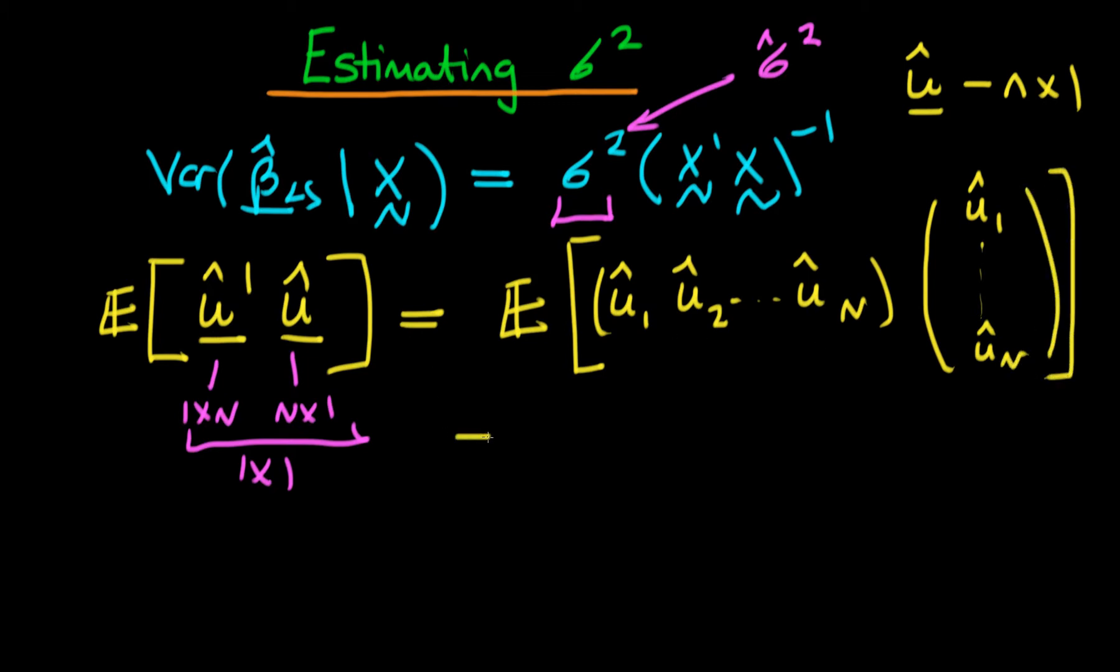We're taking the expectation of that whole thing, but essentially what we're going to get here is a sum of these square residuals. The first term is going to be u hat 1 times u hat 1, the second term is u hat 2 times u hat 2, and the final term is u hat n times u hat n. So essentially we have the expected value of the sum from i equals 1 to n of u hat i all squared.